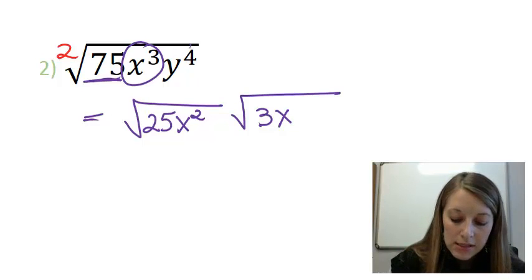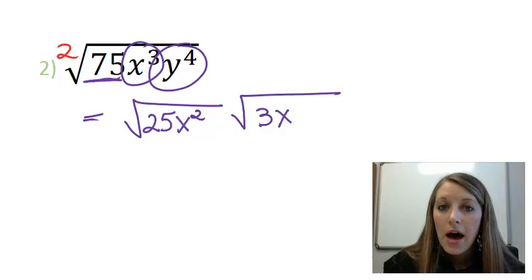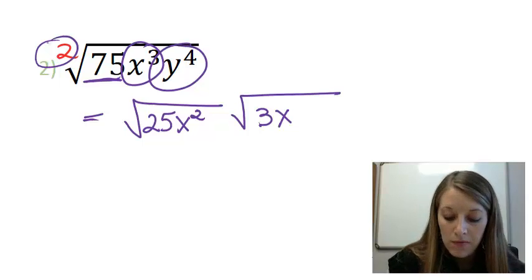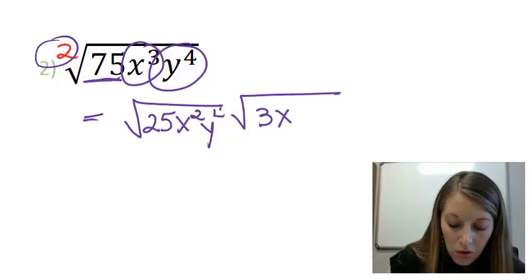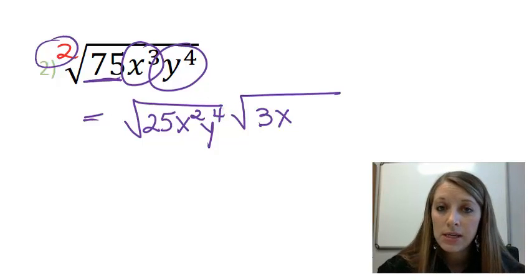Last but not least, I have four y's. I want to take out pairs of them. Well, since I have an even amount of them, that means it's all good pi. And again, notice I don't simplify anything yet. I just put them in there.